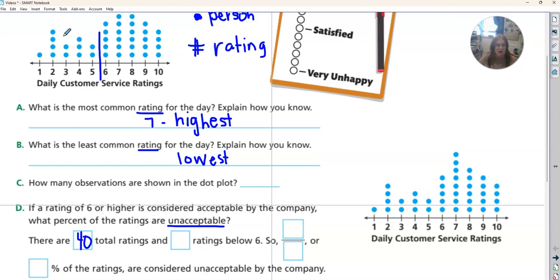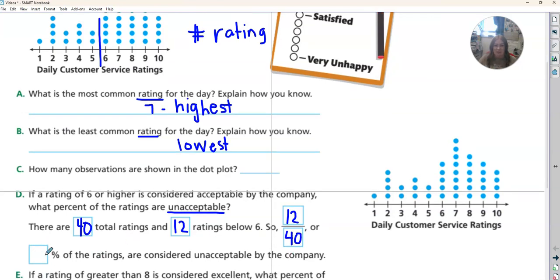So there are 5, 6, 7, 8, 9, 10, 11, 12 that are unacceptable. We're going to write that as a fraction, so 12 out of 40 are unacceptable. And now we need to change that into a percent.